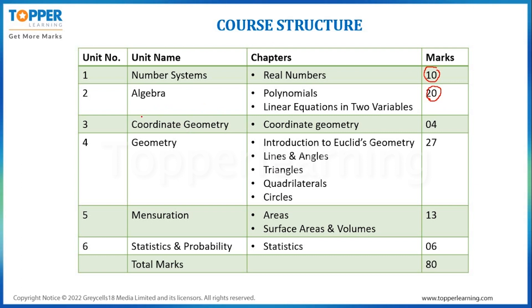The third unit is Coordinate Geometry, having only one chapter which is Coordinate Geometry itself, and it will be of a total of 4 marks.